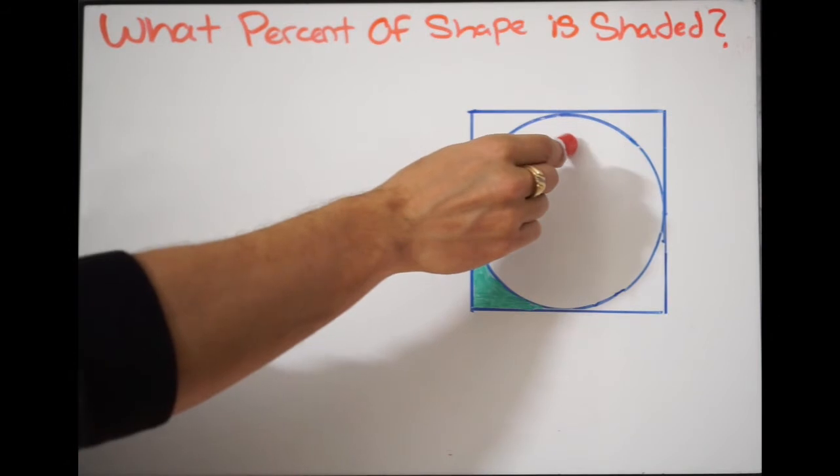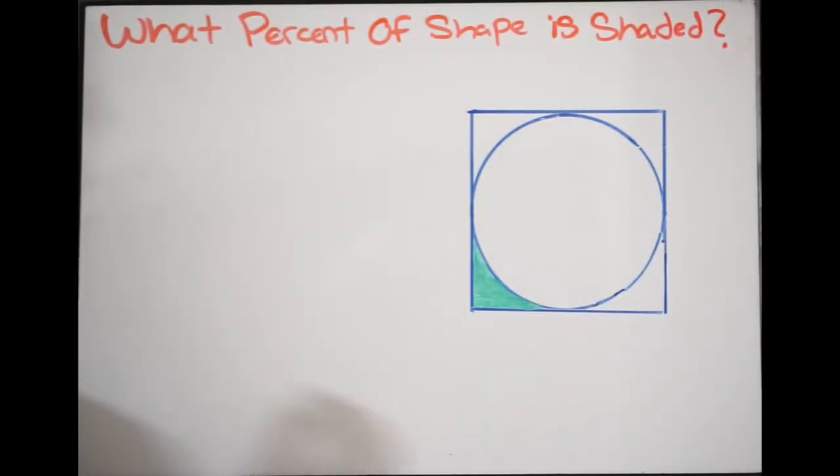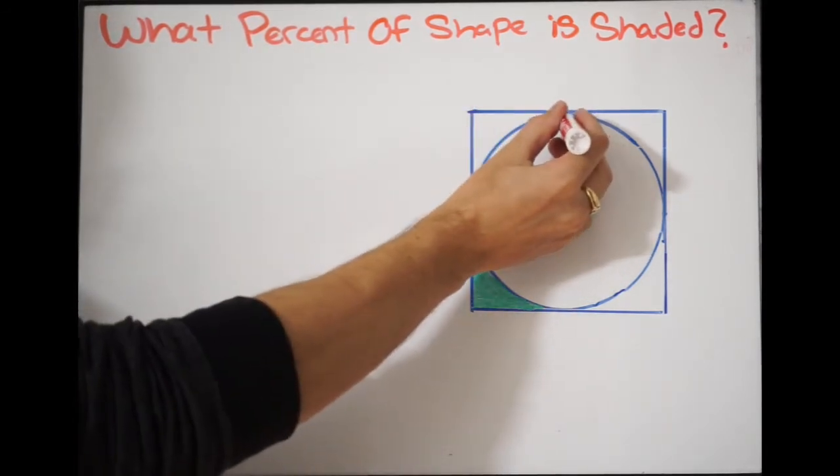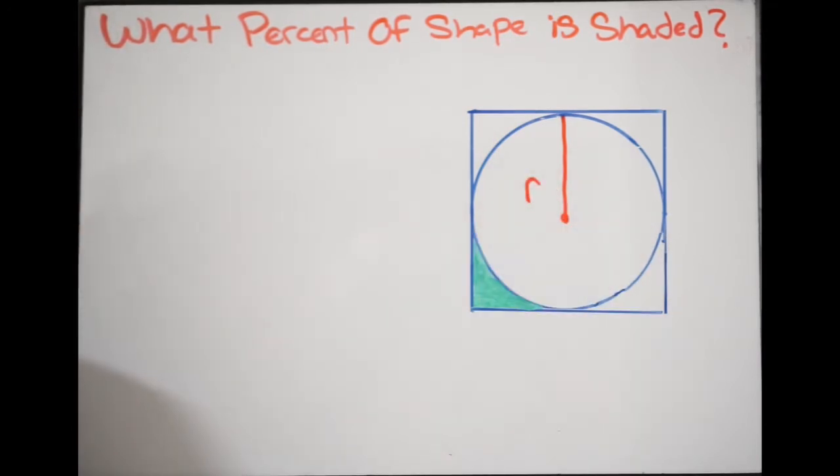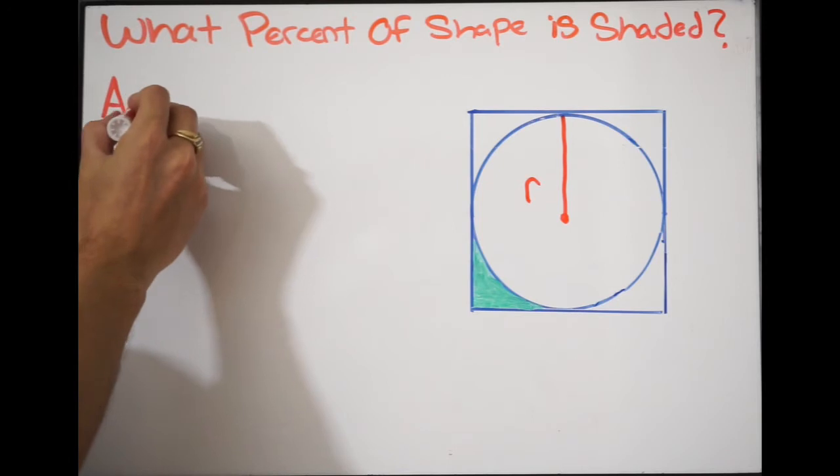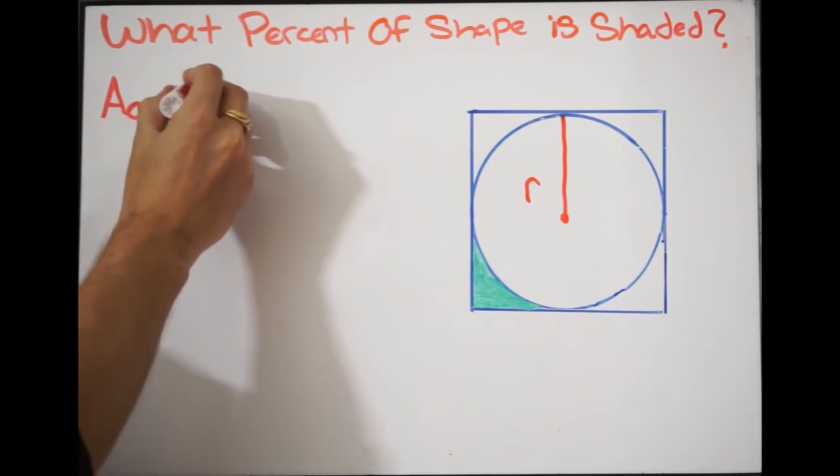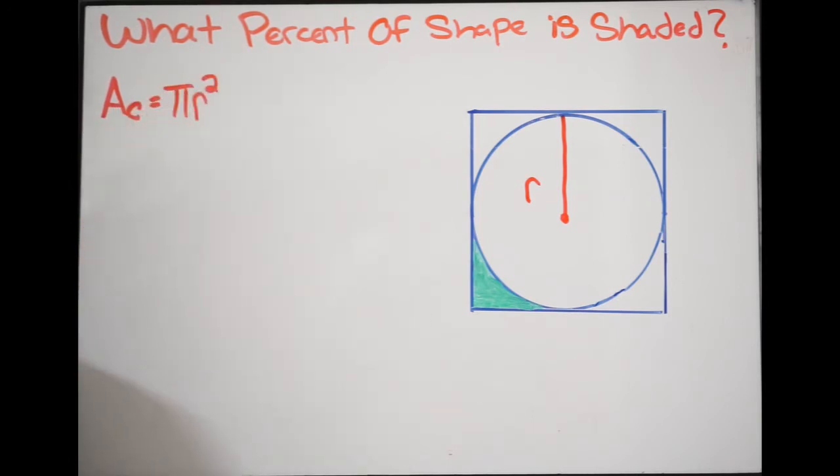For example, with my circle, what we want to do here is we want to find the area of the circle and the area of the square. So we have this circle here, and this is going to be my radius right here. We'll call that R. So the area of a circle is going to be the following: area of circle is pi radius squared.